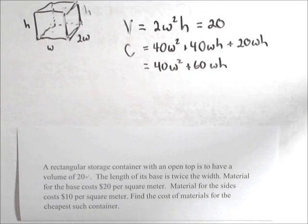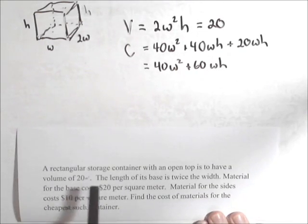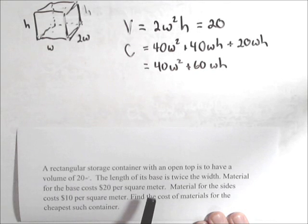In this video, we're going to look at a constrained optimization problem where we want to minimize the cost of a rectangular storage container with an open top. It's going to have a volume of 20 meters cubed, and the length of its base is twice the width.